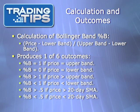The calculation for Bollinger Band Percentage B is: price minus lower band, divided by upper band minus lower band. This produces a result that falls into one of six categories.